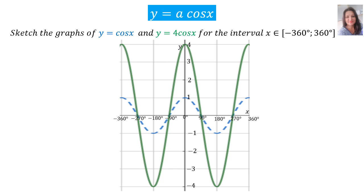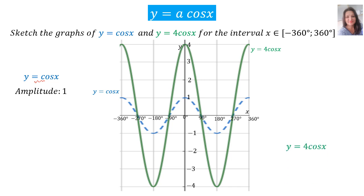Let's look at the influence of A on the cos graph. The question says: sketch the graphs of y = cos x and y = 4 cos x for the interval x is an element of minus 360 up to 360. The blue graph is the original y = cos x, and the green graph is y = 4 cos x. Back to the blue one, y = cos x: A's value is invisible 1, therefore the amplitude is 1. On the green graph, A's value is 4, and therefore your amplitude is 4.